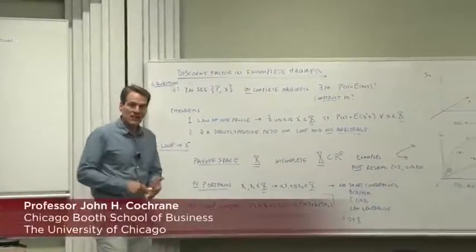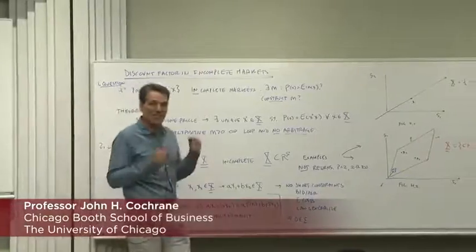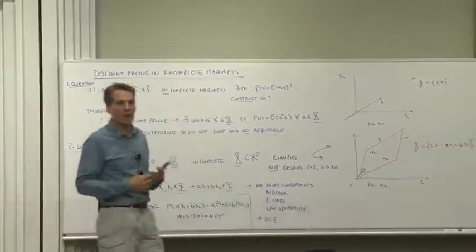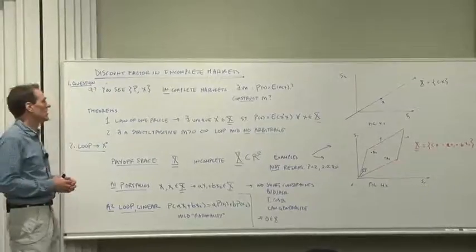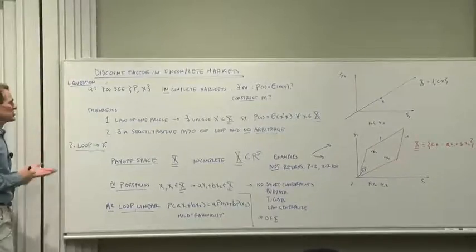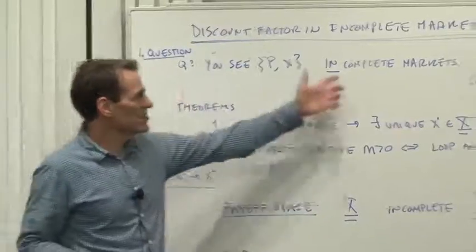We've talked a lot about discount factors and contingent claims when markets are complete. What about when markets are incomplete? That is, of course, the world we live in, so it's worth talking about. Here's our question: you see some prices and payoffs and the markets are incomplete.